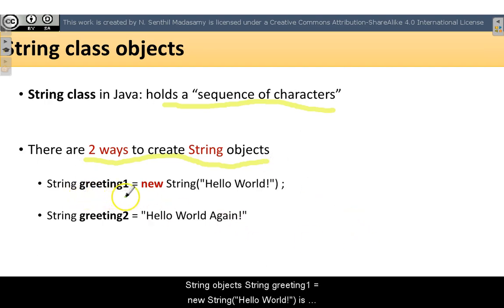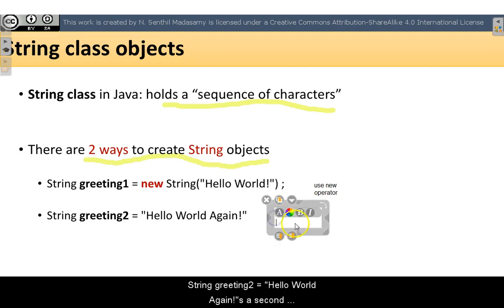String greeting1 equal to new string of hello world is the first method to create string object using new operator. String greeting2 equal to hello world is the second method to create string object without using new operator.